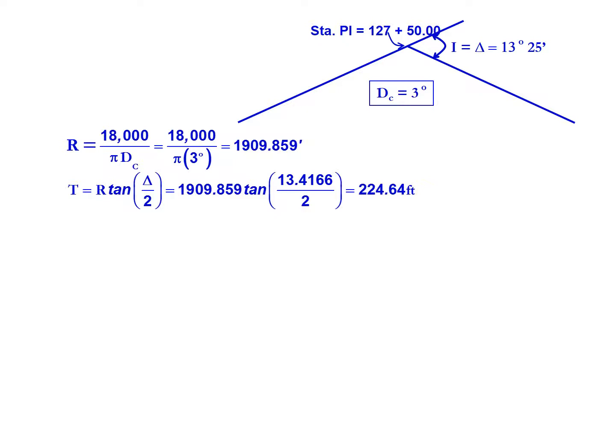We calculate our tangent length which will be equal to 1909.859, our radius, multiplied by the tangent of our intersecting angle 13.4166 degrees divided by 2, gives us a tangent length of 224.64 feet.